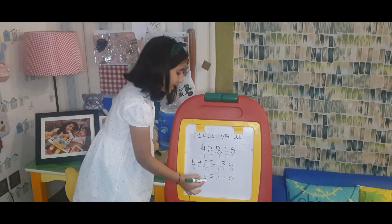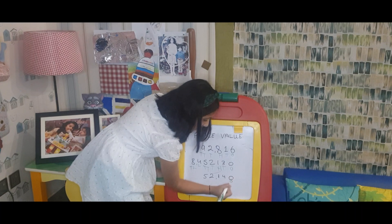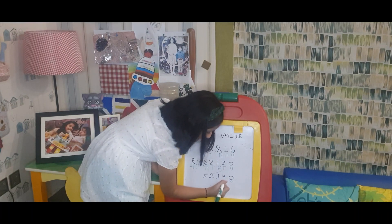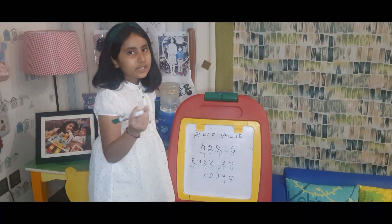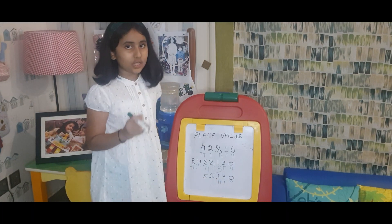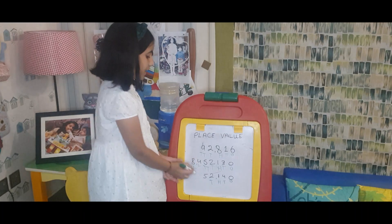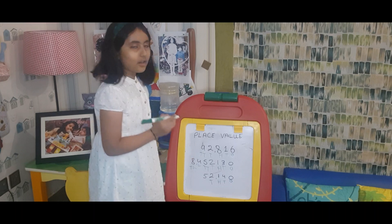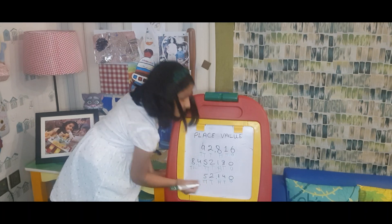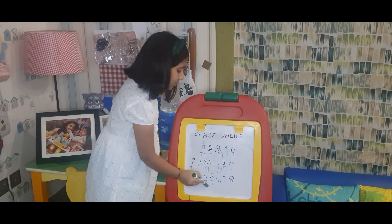Now I'm going to determine the place value of the last number. I'm going to go to the extreme right side of this number to label the first digit as ones. The digit on the left side of ones is going to be tens, so I'll write a T over there. The digit on the left side of tens is going to be hundreds, so I'll write an H. Then the digit on the left side of hundreds is thousands, and the digit on the left side of thousands is ten-thousands, so I write a double T there. The total number is 52,140.